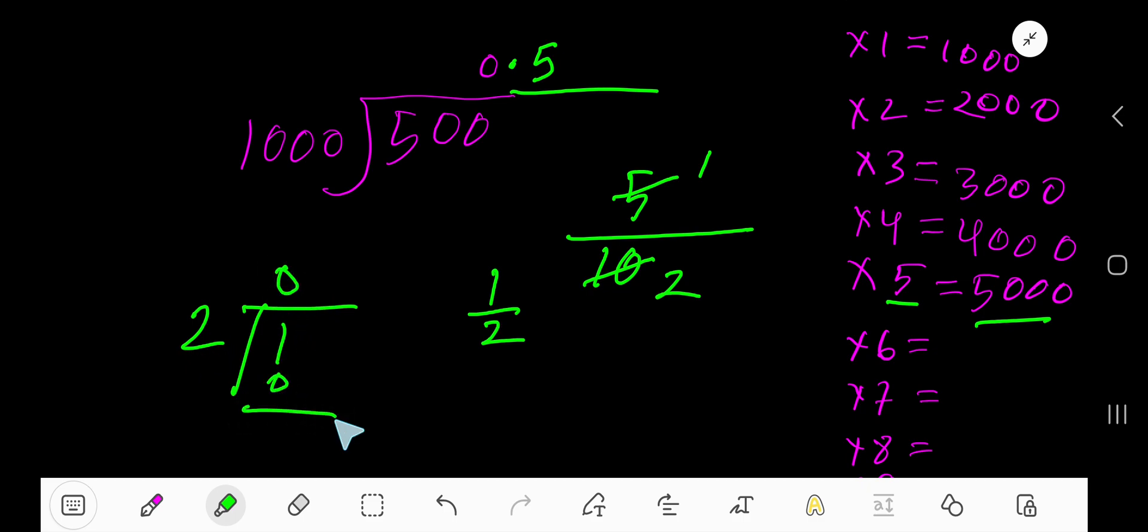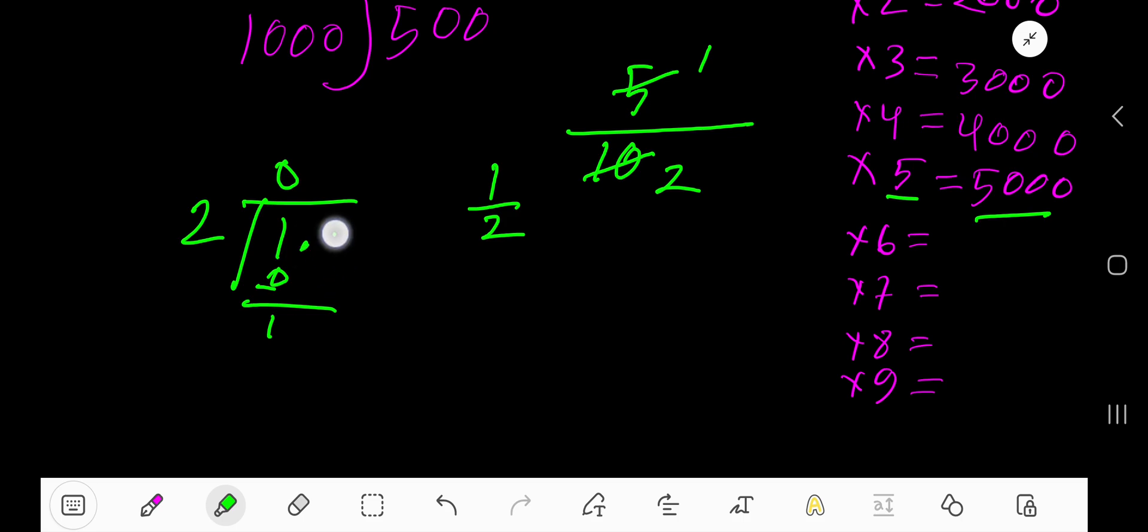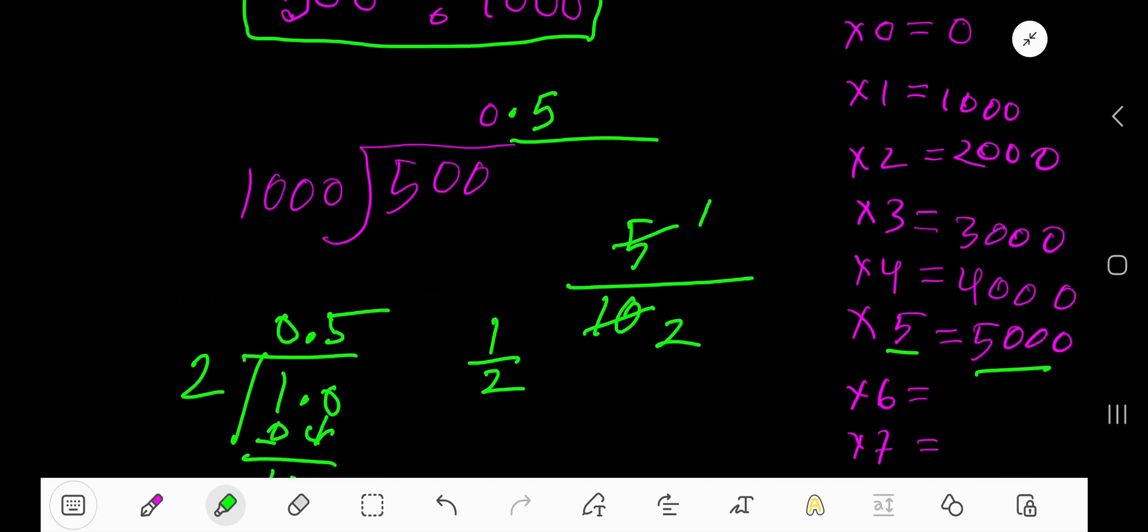To proceed, take a decimal, then 0. Bring down the 0, and this point will come here. 2 goes into 10 five times. So now you know the three methods to solve this problem.